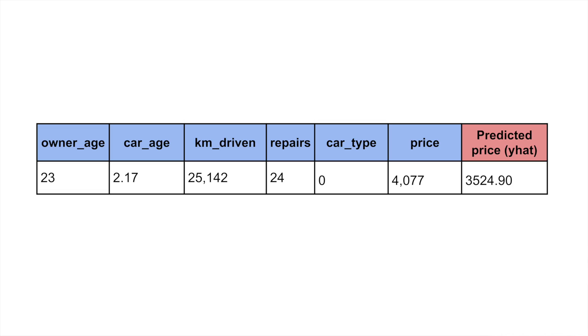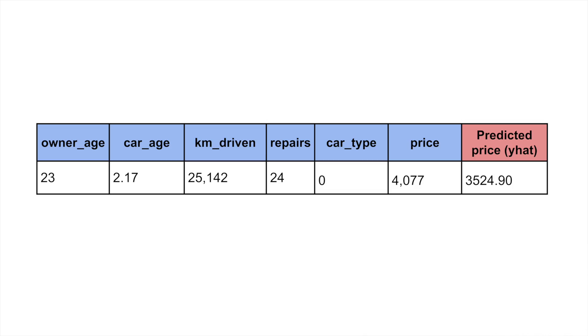Suppose we already have a model that was trained on this dataset. Here we have one instance from this dataset. In the last column, we can see the predicted price for this car. If we wanted, we could change the value of any one of these features. We could see what the predicted price would have been if the same car was 10 years old or if it had fewer repairs. In fact, we could do this over the entire range of a feature.